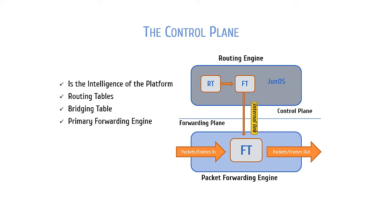The secondary forwarding table is what is used by the PFE mainly for forwarding transit traffic. The PFE basically continually pulls down updates from the primary forwarding table located in the routing engine so that it has the most up-to-date information on how to forward transit traffic — or traffic that is passing through the device. Since the RE is doing the intelligence part of the process, the PFE only has to carry out its orders as instructed in the forwarding table. This allows Junos to offer things like graceful routing engine switchover and in-service software upgrades, which basically allows you to update or upgrade the Junos software while the device is still in production and passing traffic.